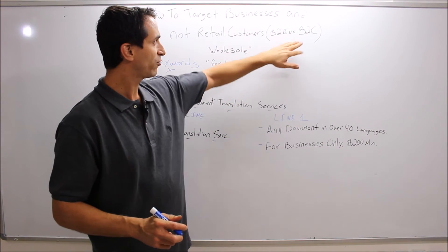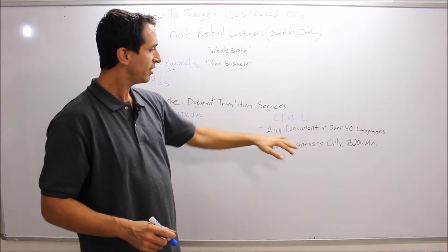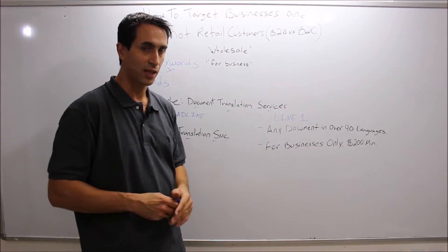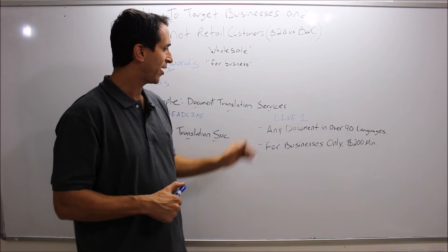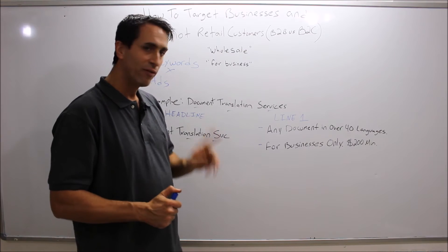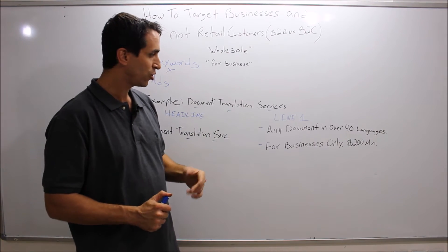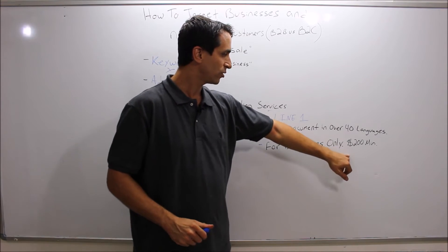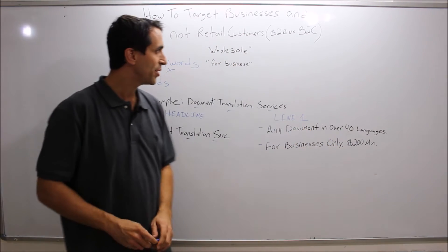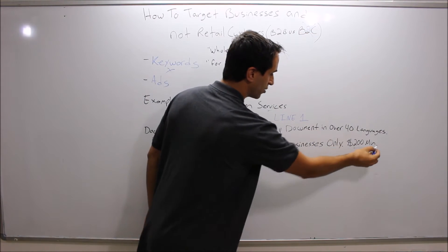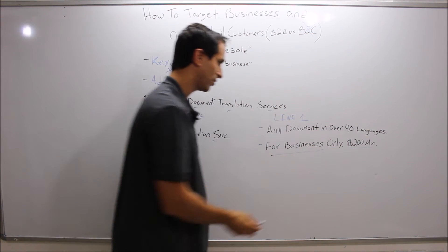But the interesting part is line one. If you're going after B2C, you can say 'any document in over 40 languages.' That could bring in B2B or B2C - both qualified, that's fine. However, to limit it to business only, you would spell out 'for business only, $200 minimum.' Put your minimum in there and this would disqualify a lot of the B2C clients who can't afford $200, who are not a business. Really call it out.